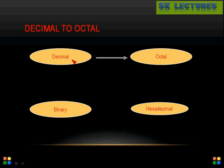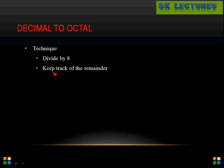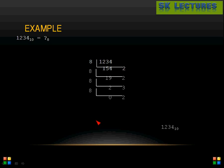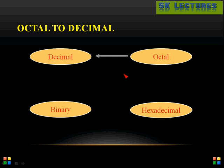For decimal to octal conversion, the same principle applies: divide by 8 and keep track of remainders. Taking 1234 base 10, dividing by 8 repeatedly and tracking remainders gives the octal result, where the first remainder is the LSB and the last is the MSB.